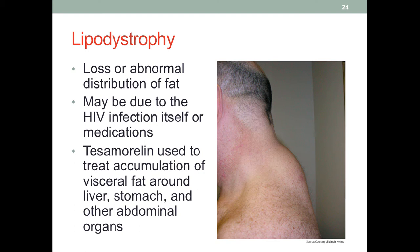This is lipodystrophy. In this picture, the mass visible here is quite abnormal — we definitely should not be seeing a mass there. This is a picture of dorsal cervical lipodystrophy: dorsal meaning back, cervical referring to the neck, so the back of the neck has a large chunk of fat. The term lipodystrophy refers to the loss of fat or its abnormal distribution. This condition may be due to the infection itself or medication side effects. Visceral fat is more pro-inflammatory and metabolically damaging, and we should reduce it if we can.